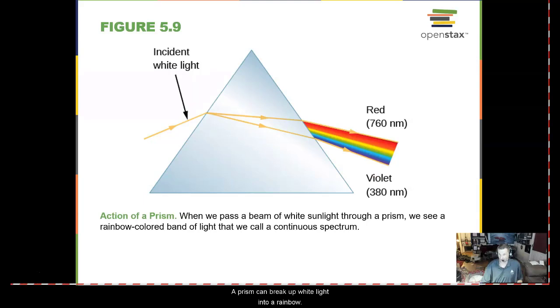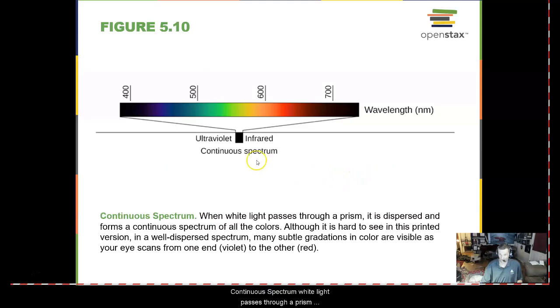A prism can break up white light into a rainbow, and we call that rainbow a continuous spectrum. In a continuous spectrum, white light passes through a prism and all colors are dispersed.